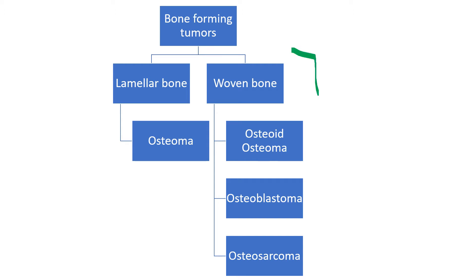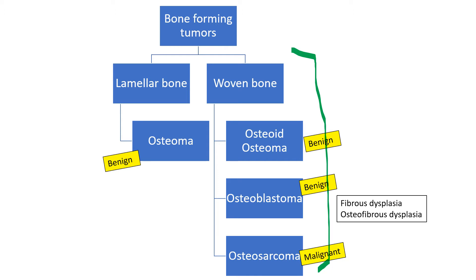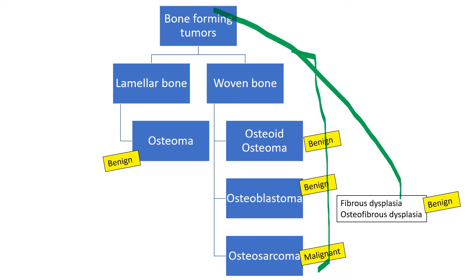This is the differential diagnosis if you see more woven bone. An osteoma is completely benign, and so is an osteoid osteoma, and so is an osteoblastoma. The only malignant tumor here is an osteosarcoma. Traditionally fibrous dysplasia and osteofibrous dysplasia are not classified as bone-forming tumors, but they produce enough bone that I link them with bone-forming tumors — and these are again benign.